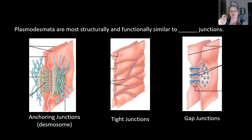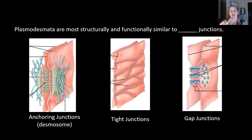So plasmodesmata are most structurally and functionally similar to what type of junctions in animal cells? Plasmodesmata were little channels in between each cell through the cell wall. Comparing that to animal cell junctions — anchoring junctions, tight junctions, or gap junctions — it's the gap junctions that are most like plasmodesmata.